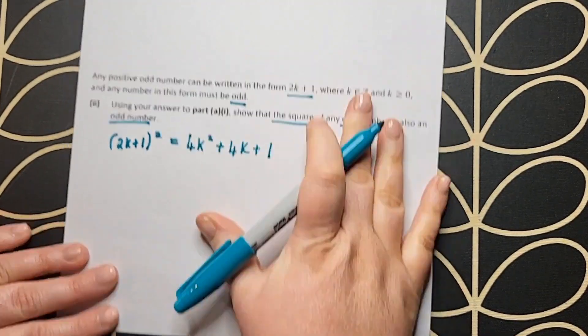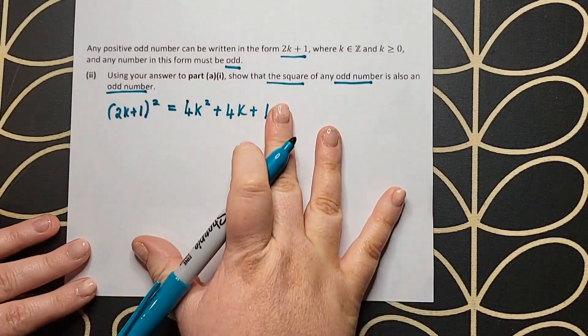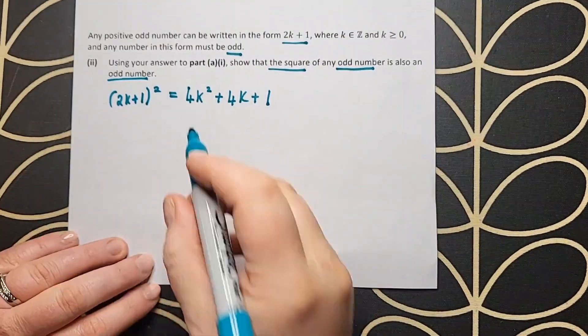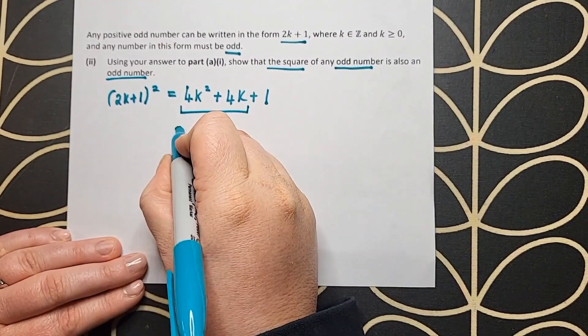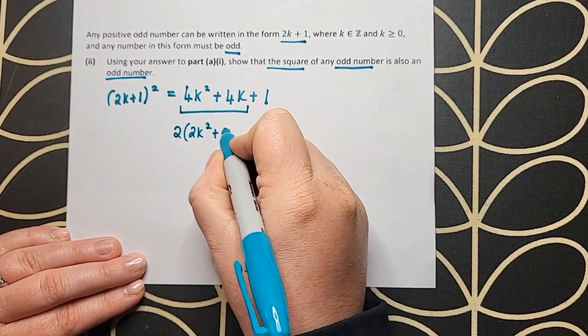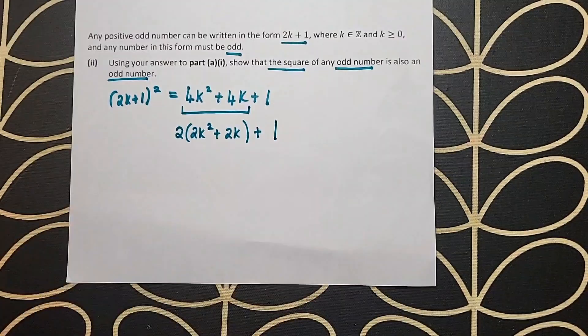I'm going to take the information from above. I'm going to say that (2k + 1) squared should give me an answer of 4k squared plus 4k plus 1. I'm taking that from the multiplying I did in part I.